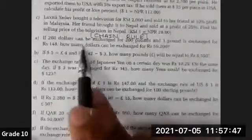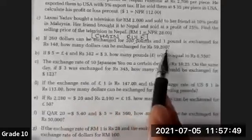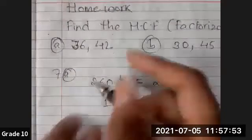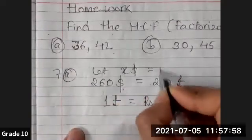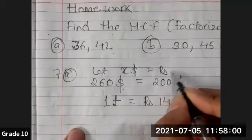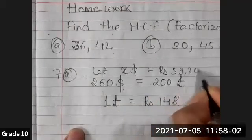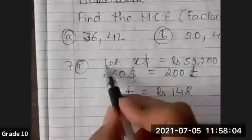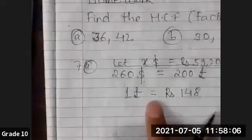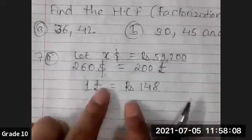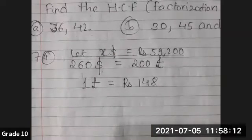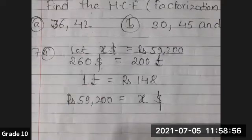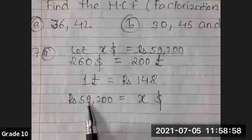The last part of the question, the main question part, is how many dollars can be exchanged for 59,200 rupees. Actually in the beginning we have to write: let x dollars equals Nepali rupees 59,200. But this is the first part, and while following the chain rule, I have to keep 59,200 on this side and dollar on this side.